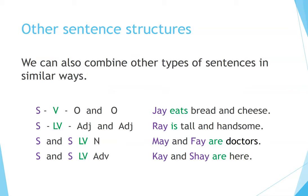We can also combine other types of sentences in similar ways. Subject-Verb-Object and Object: Jay eats bread and cheese. Subject-Linking Verb-Adjective and Adjective: Ray is tall and handsome. Subject-Subject-Linking Verb-Noun: May and Faye are doctors. Subject-Subject-Linking Verb-Adverb: Kay and Shea are here.